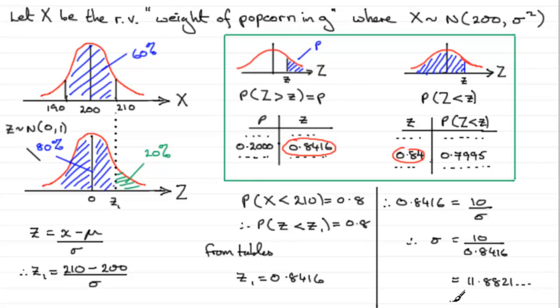And you could give that, say, to some degree of accuracy. Let's say, three significant figures. Then it would be 11.9. And if you put the units in, standard deviation would be measured in grams for this question. So that would be 11.9 grams to three significant figures.